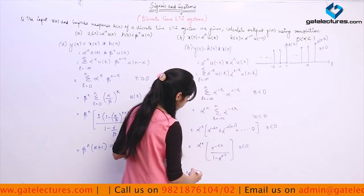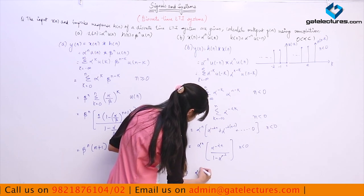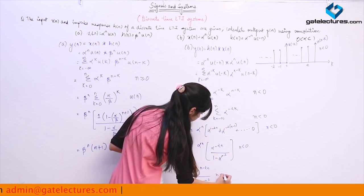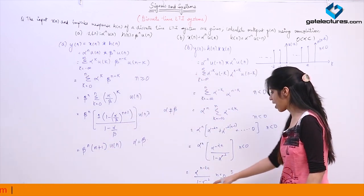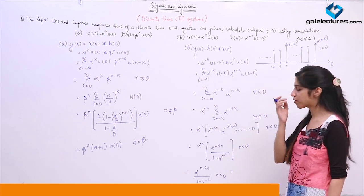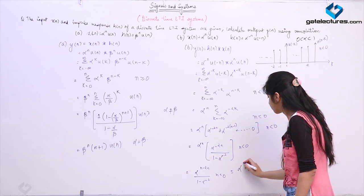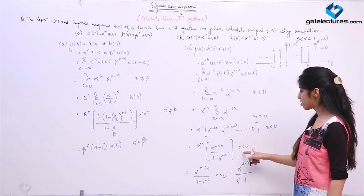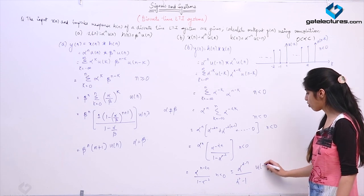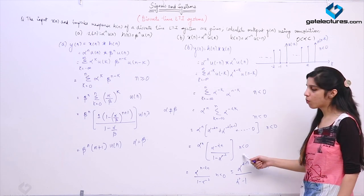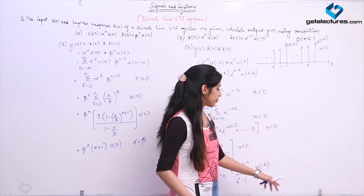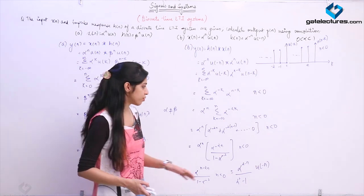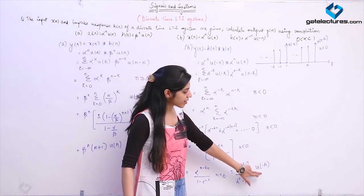Simplifying: first term α^(-2n) divided by (1 - α^(-2)), multiplied by α^n outside, gives α^(n - 2n) / (1 - α^(-2)). Multiplying numerator and denominator by α^2 simplifies this further. To express the condition n < 0, I multiply by u[-n-1], since u[-n-1] starts from n=0 whereas u[-n] includes n=0. For n values strictly less than 0, multiply by u[-n-1].